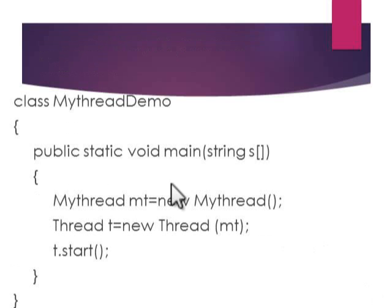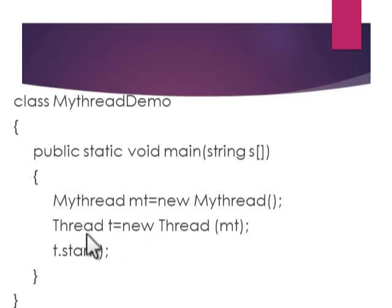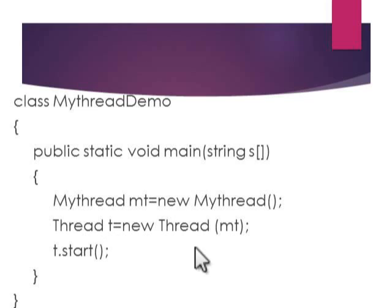Next, we create a child class called MyThreadDemo. In that class, we create a MyThread object and also create a Thread class object, passing the MyThread object into it. We then call the start method using the Thread class object.